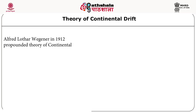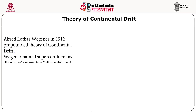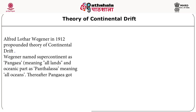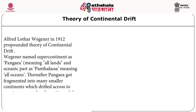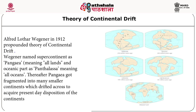Alfred Lothar Wegener in 1912 propounded the theory of continental drift. Wegener named the supercontinent Pangaea, meaning all lands, and the oceanic part Panthalassa, meaning all oceans. In the diagram, you can see this single landmass Pangaea surrounded by Panthalassa. Pangaea later fragmented into many smaller continents and drifted to acquire the present-day disposition of continents, as seen in the final figure.